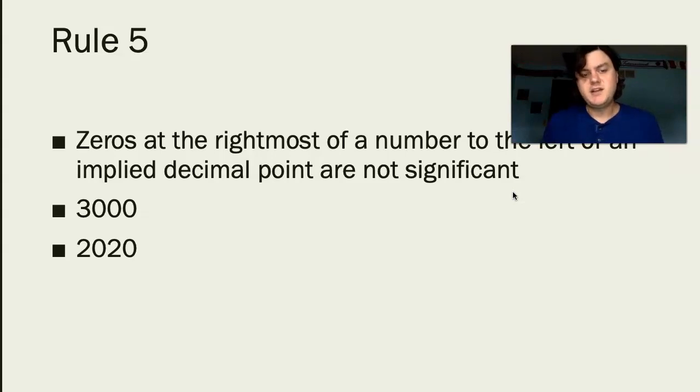Also, 2020. The two non-zero digits, the twos, are significant. The first zero is also significant because it is in between two non-zero digits. But the last zero, according to Rule 5, is a non-significant digit. It is a placeholder.